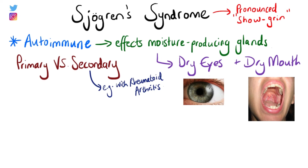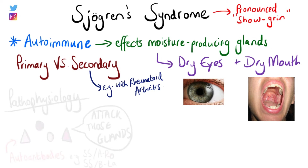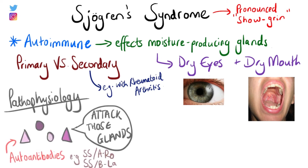So how does the disease manifest? Sjogren's syndrome develops when autoantibodies are produced by the body, and they initiate the body to attack its own cells of the glands — particularly the salivary glands and the lacrimal glands.